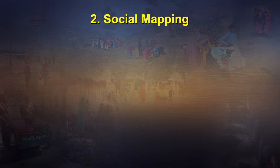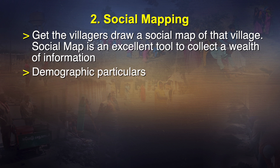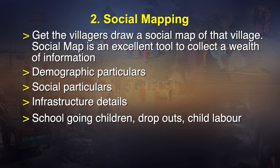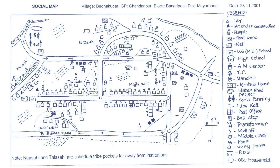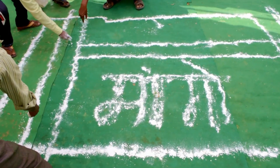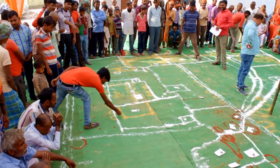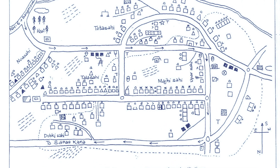The second method is social mapping. This involves getting the villagers to draw a social map of their village. A social map is an excellent tool to collect a wealth of information — demographic particulars like population and households, social particulars like settlement pattern, infrastructure details, roads, lighting, water, school-going children, dropouts, and child labor. The villagers draw it on the ground and you copy it on a chart for your purposes. The sample shown is a social map drawn in a village, with all roads, houses, hand pump locations, pipe water supply, toilets, schools, and Anganwadi marked.